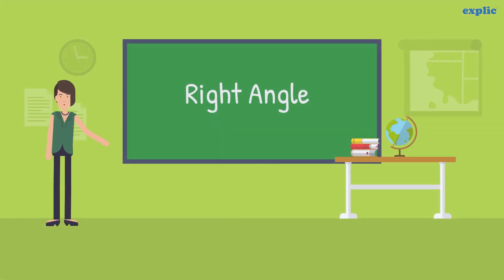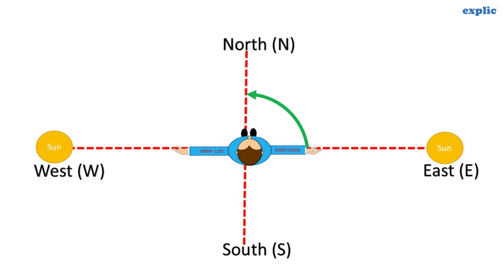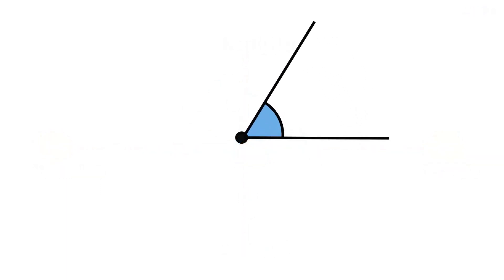As we all know, the sun rises in the east and sets in the west. Suppose you are standing facing the east. Just spin at your place anti-clockwise to face the north direction. The angle you traveled is called a right angle. The measurement of a right angle is 90 degrees.